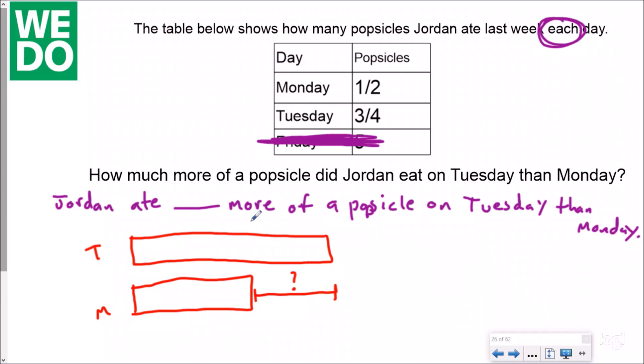So now I need to insert my information. I know on Monday he had one half of a popsicle. On Tuesday he had three fourths. And if I'm looking for how much more I had on Tuesday,